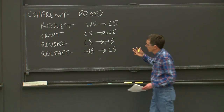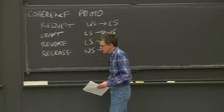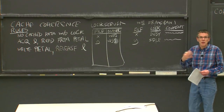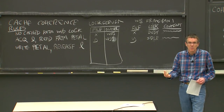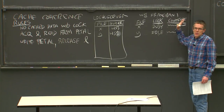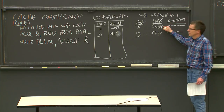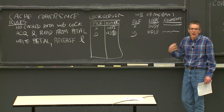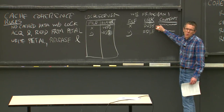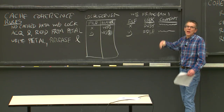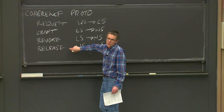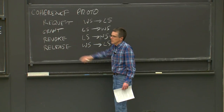The response to a revoke is the workstation sending a release. If the workstation gets a revoke while it's actively using the lock — in the middle of a delete or rename — it won't give up the lock until it's finished that file system operation. Then the lock state transitions to idle, and after writing to Petal if needed, it releases the lock.